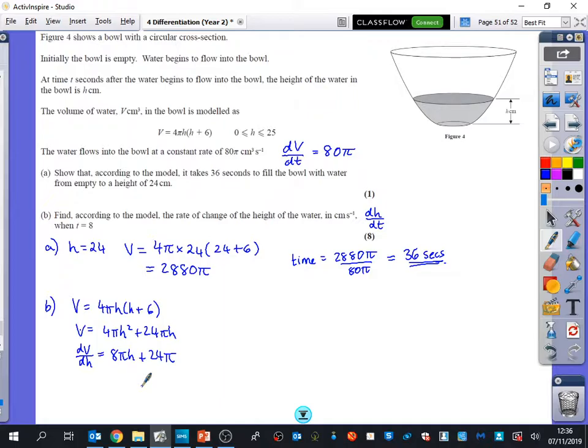We also know that dV/dt is 80π. Maybe that's going to be useful somewhere as well. The thing the question wants me to find out is dh/dt. I'm going to split that into the two things that I have, which are dh/dv and dv/dt. I know what dh/dv is, and I know what dv/dt is.